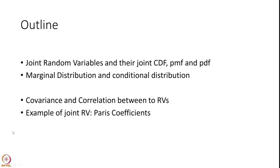In this session we would like to introduce what is known as joint random variables and their joint cumulative distribution function, probability mass function in the discrete case, and probability density function in the continuous case. We will then introduce marginal distribution functions and conditional distributions, define covariance and correlation between two random variables, and give an example in terms of estimated Paris coefficients.